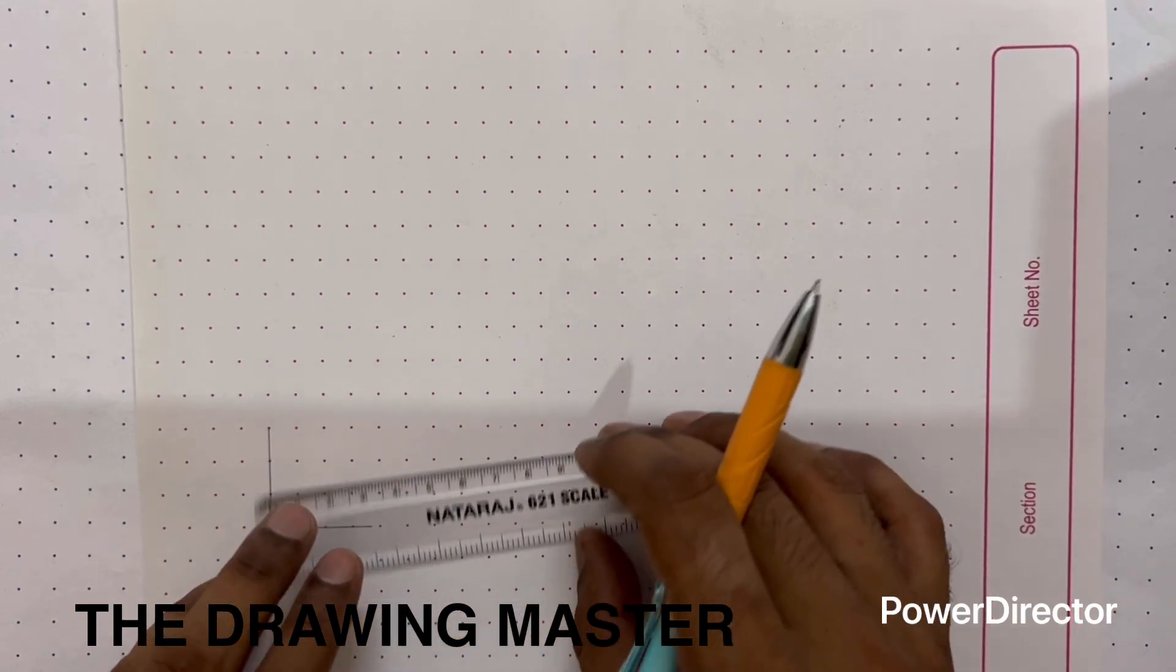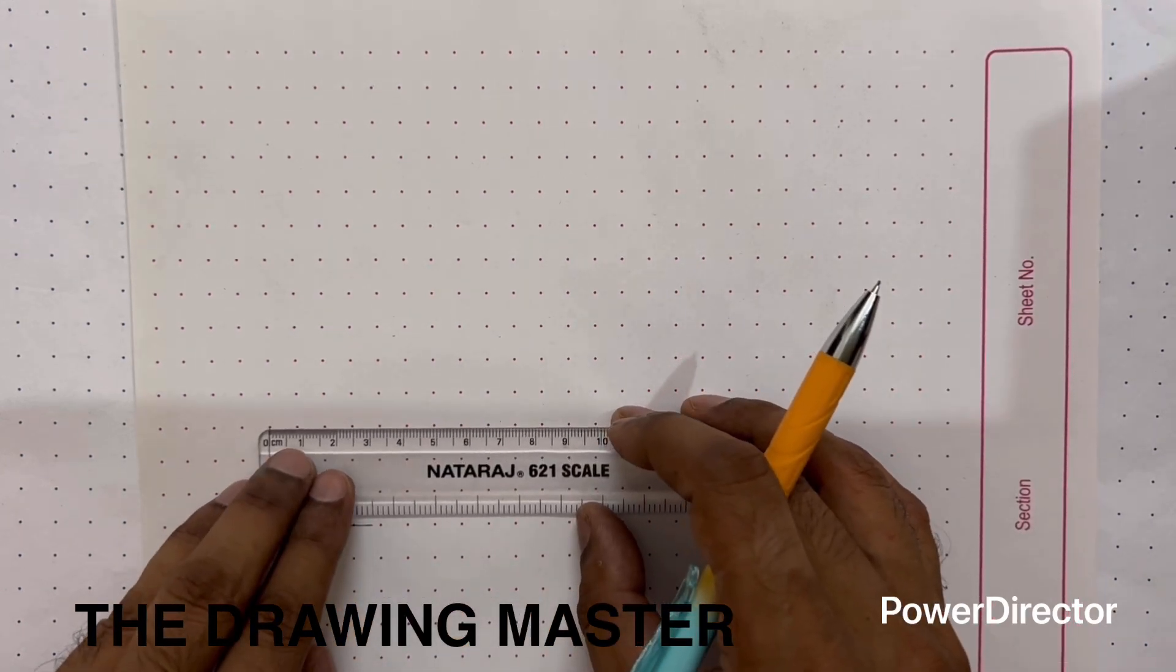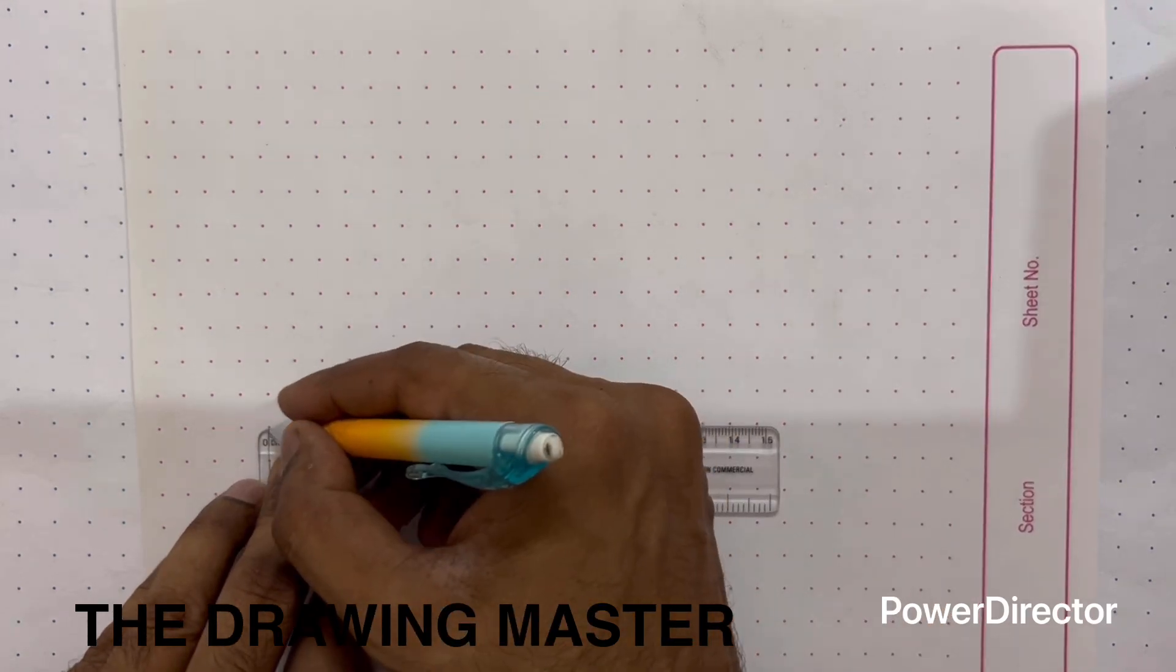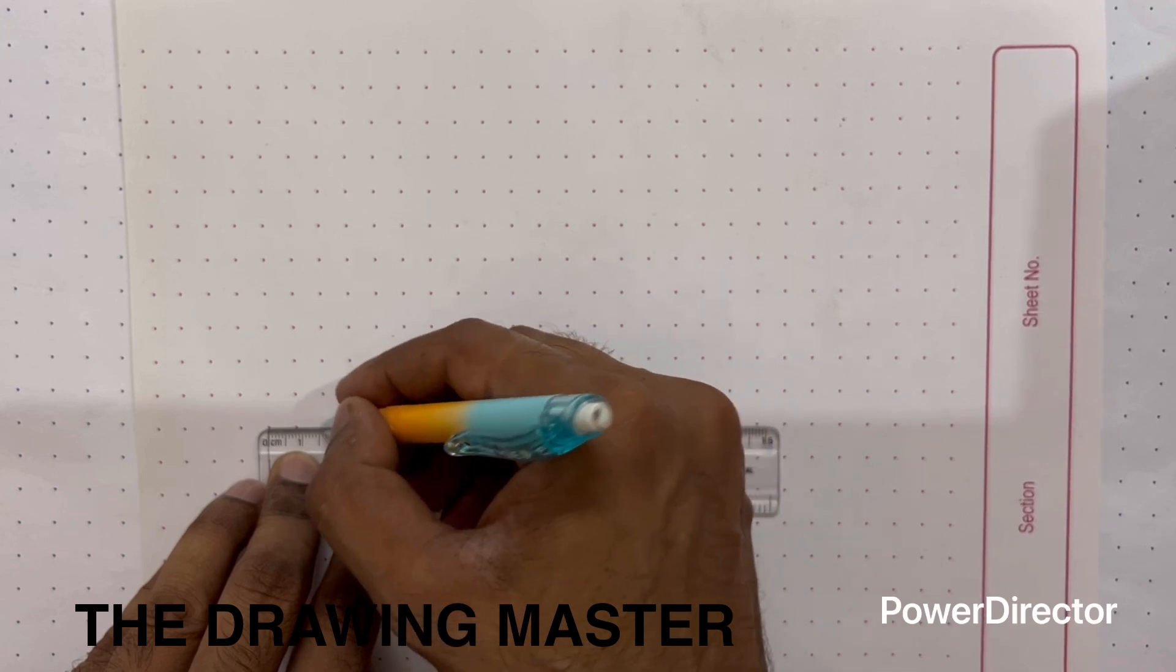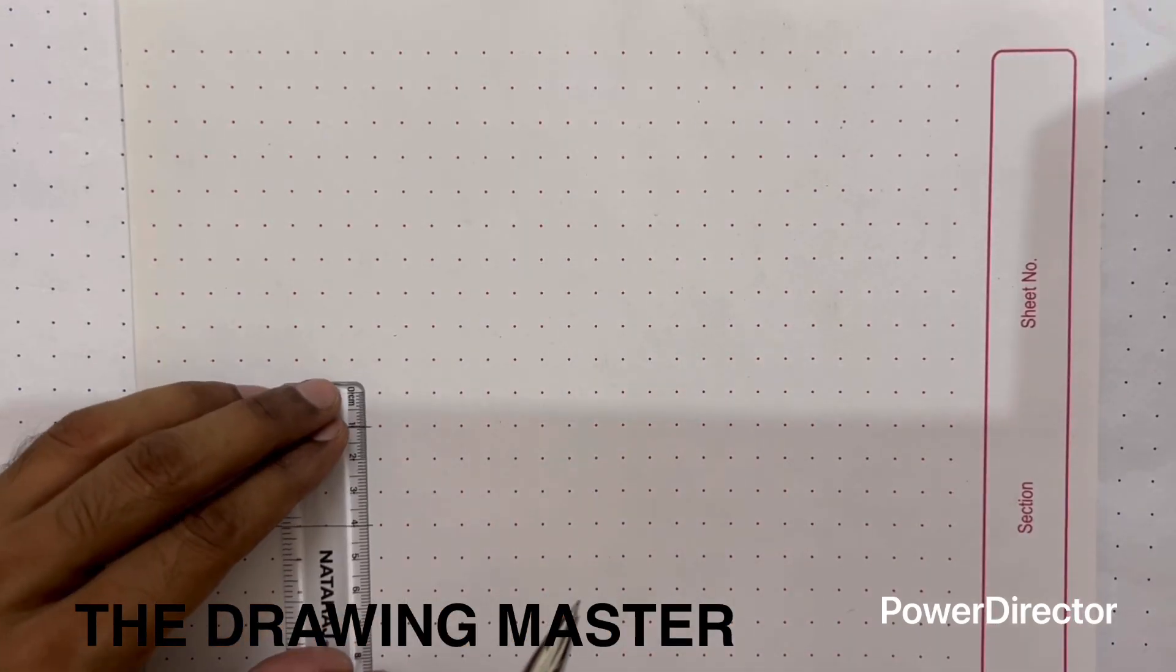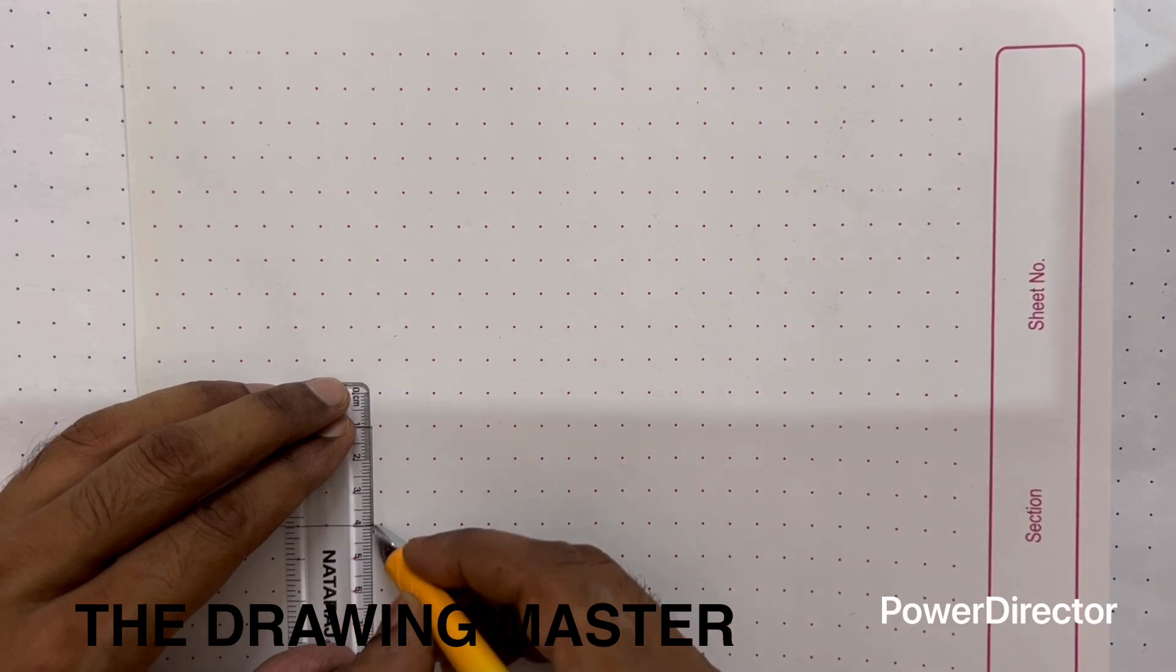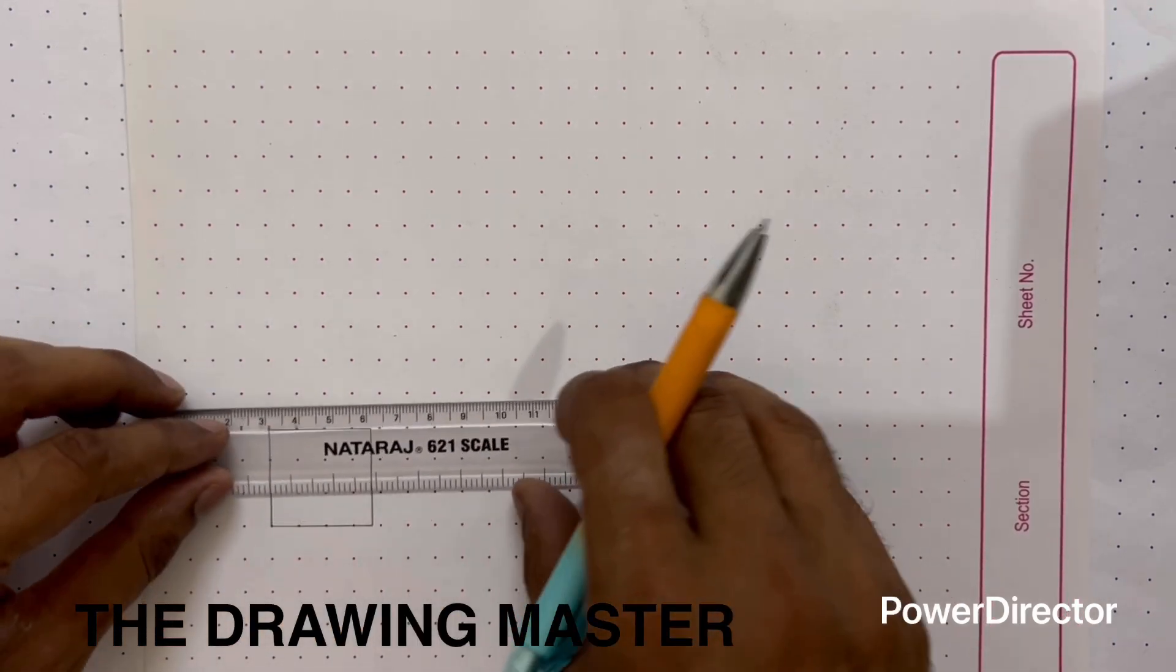You can draw it side by side and you can also note down the time that how much time it will take to draw while attempting the exams. And you can also see the line work. This is the top view of square base prism.